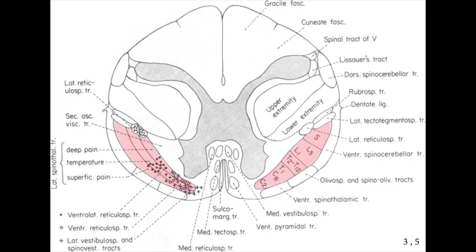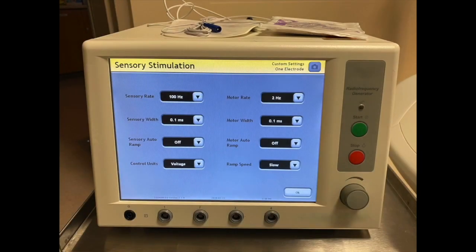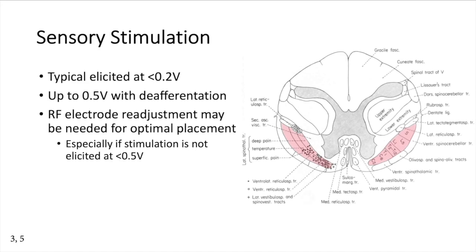There is variability in the location of spinal pathways, especially the anterior corticospinal pathways, and it is therefore critical to utilize intraoperative monitoring to ensure patient safety and avoid complications. Sensory stimulation at 100 Hz with 0.1 millisecond pulse widths at less than 0.15 volts is performed to confirm appropriate placement. This should give the patient a sense of warmth or mild pain on the opposite half of the body in the region of pain. Sensory stimulation can usually be elicited at less than 0.2 volts; however, in patients with deafferentation, higher amplitudes up to 0.5 volts may be needed.